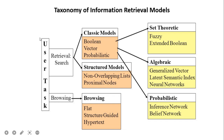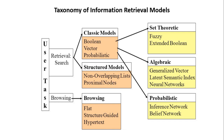Taxonomy of Information Retrieval Models: under retrieval and search, two models are there — classic model and structured model. In the classic model, Boolean, vector, and probabilistic are there, and these classic models are extended to set theoretic, algebraic, and probabilistic respectively. For the structured model, two approaches are there: non-overlapping list and proximal nodes. For browsing, three types of documents are considered: flat, structure guided, and hypertext. Flat documents have no links; structure guided is like a scanned PDF of a book with sections; and hypertext is the worldwide web.